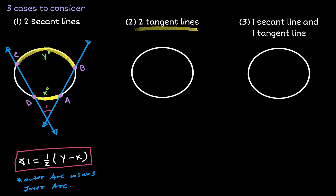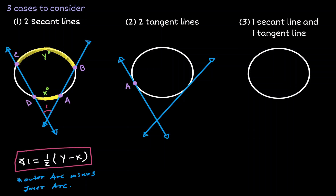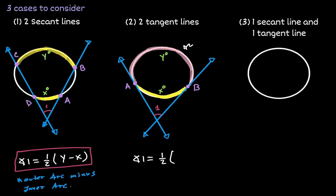But what would happen if we consider two tangent lines? Let's draw those tangent lines and call the points of intersection A and B. Notice that we have the same scenario — the intersection also creates an angle; let's call it angle 1. We also create two arcs: the bottom arc in yellow with a length of X and the upper arc in pink with a length of Y. The same relationship holds true: angle 1 is equal to one half of the difference of the outer arc Y minus the inner arc X.